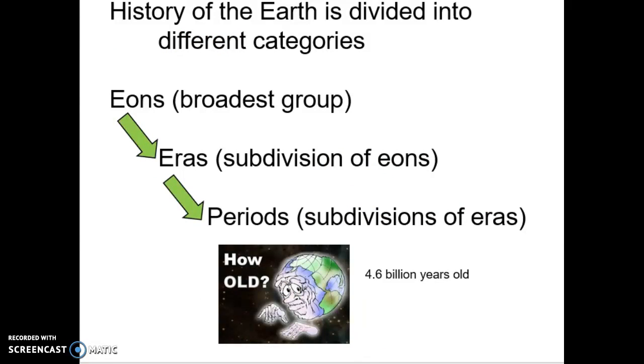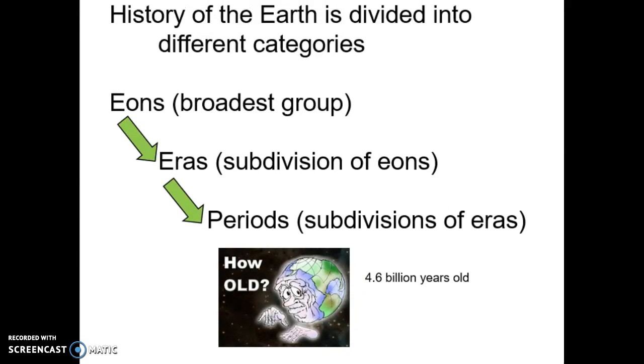So now let's get back to the Earth and the history of the Earth. When we look at the Earth and the history of it, we divide the timeline up into different categories. Eons are the broadest category of time. We then divide eons into smaller subdivisions called eras. Eras then are further subdivided into subdivisions called periods. So it's similar to scientific classification where we have domain, kingdom, phylum. When we talk about the Earth's history in time, geological time, we go eons, eras, periods.